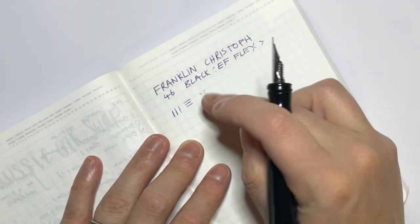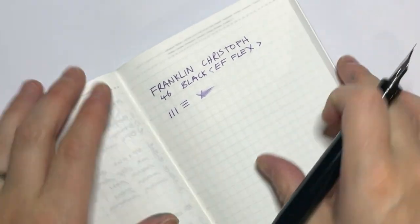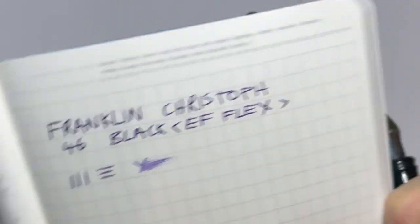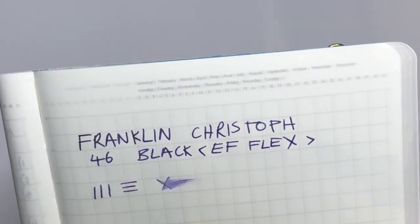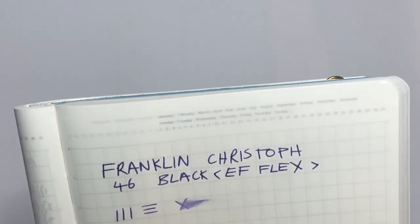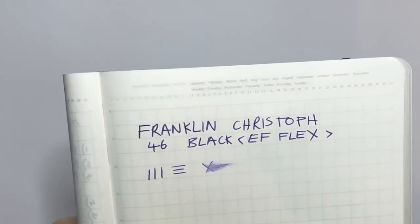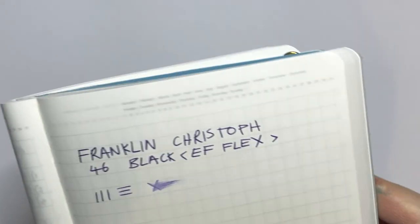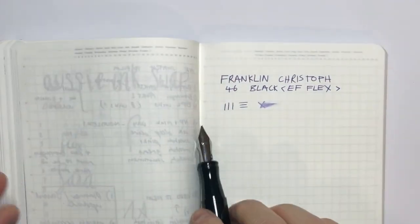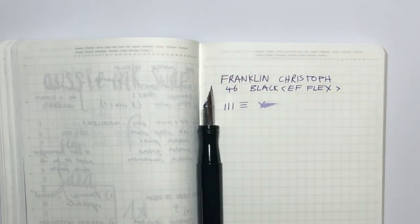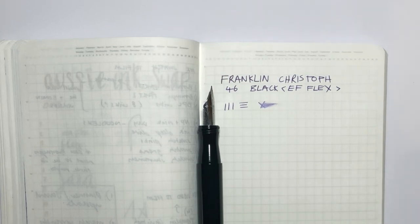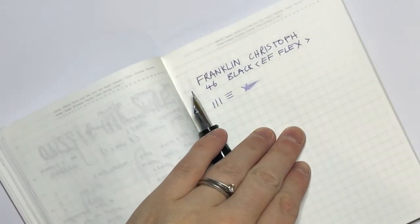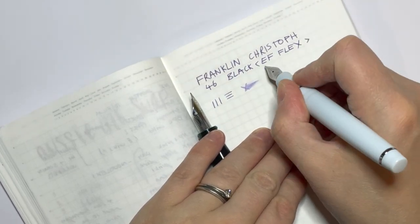So again, this is with no pressure. What I love, I think, about the fact that it is a flex pen—even when you're not flexing it—makes the extra fine a wet writer, and it probably reads more like a fine of some of my other pens. I'm just going to see what I have with me to see if I can compare it to a fine. This is a fine nib of a Jin Hao.